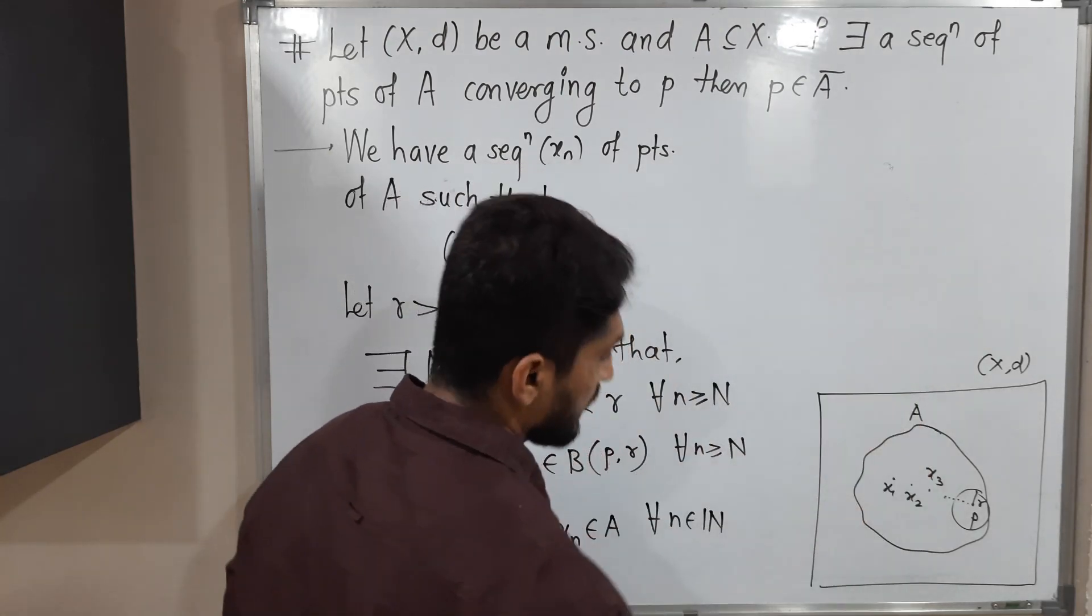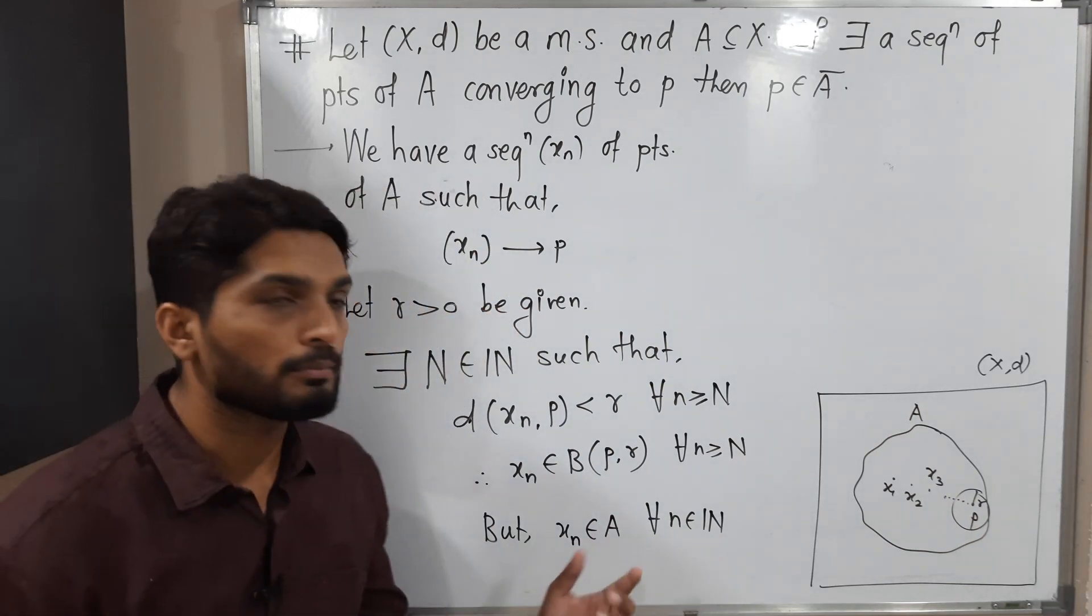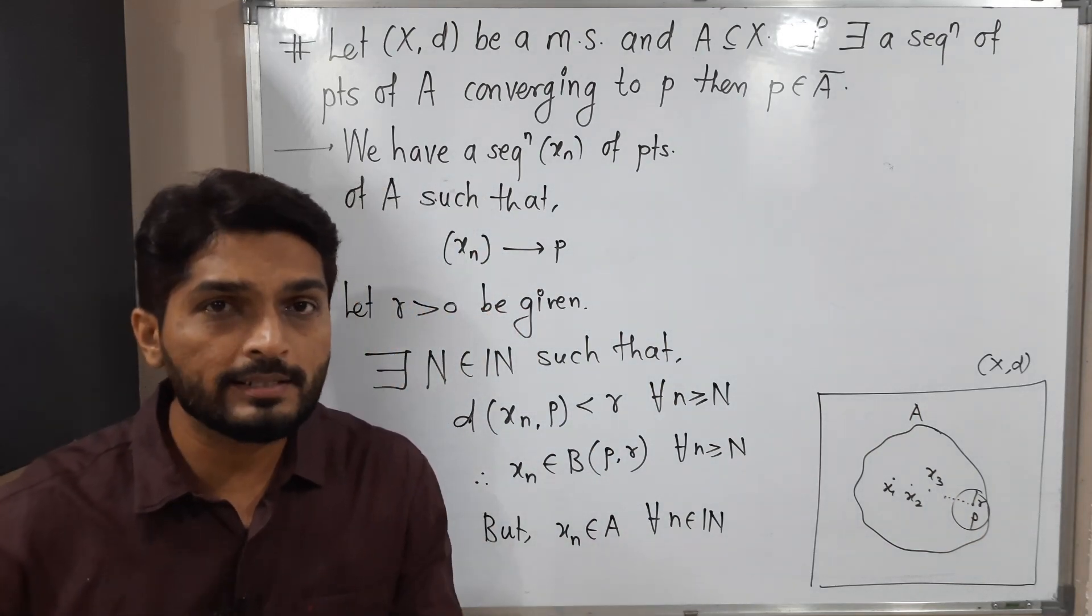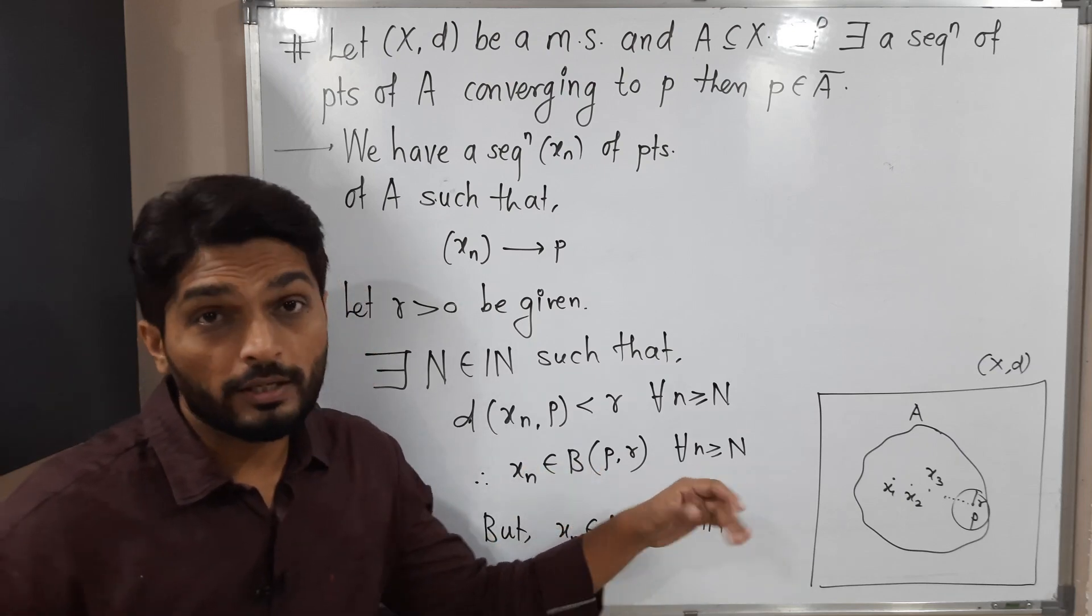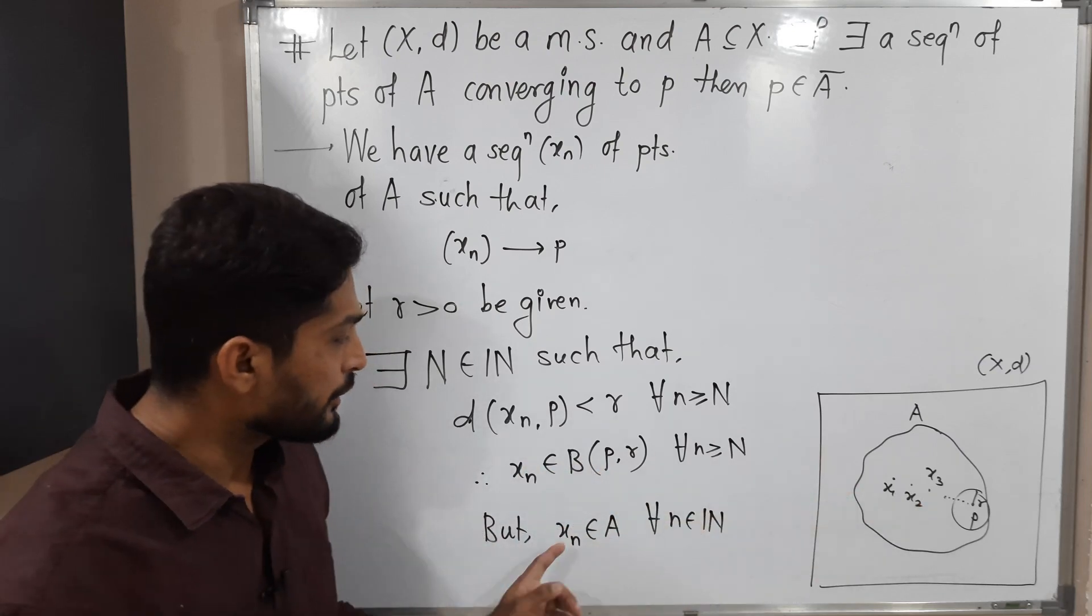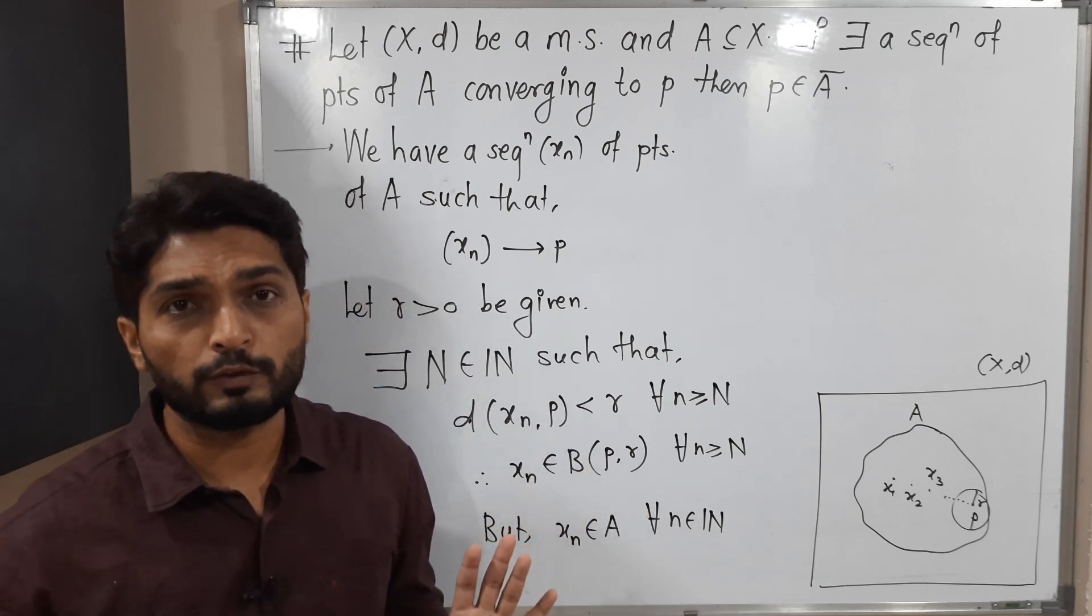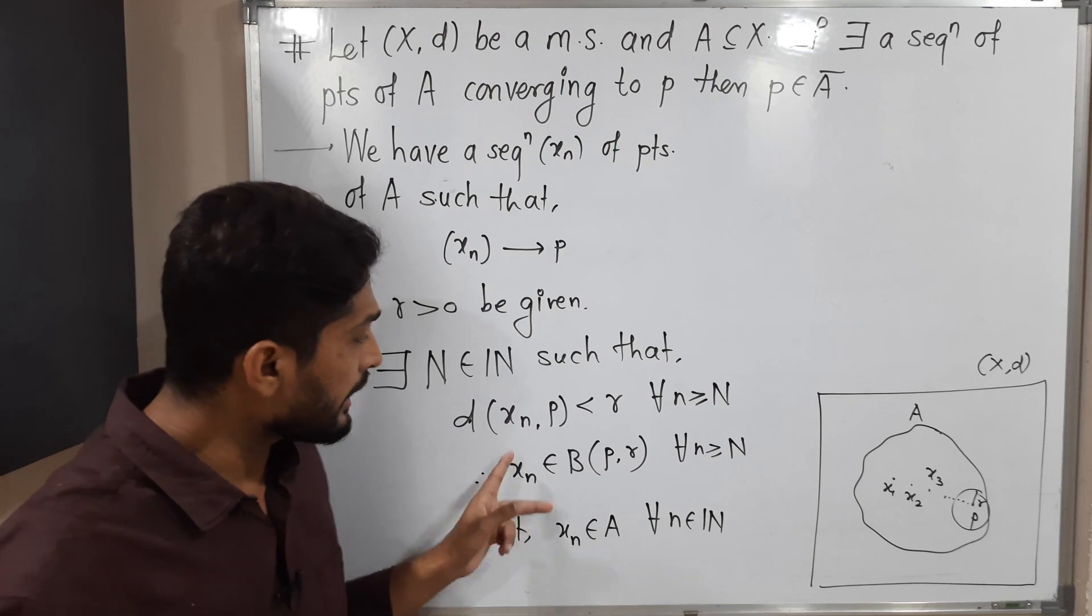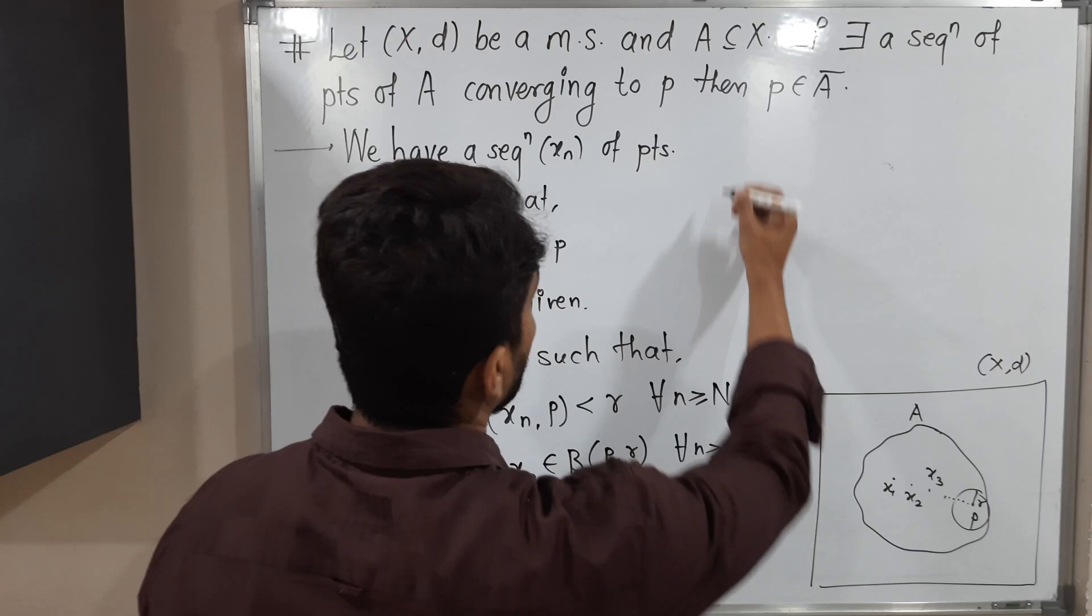This is a given thing that xn is the sequence of points of A, so each xn belongs to A. What we are saying is xn belongs to this ball with this condition for n greater than or equal to capital N. Here we are saying xn belongs to A for every n in the set of natural numbers. So we can say xn lies in the intersection.